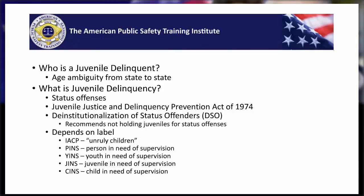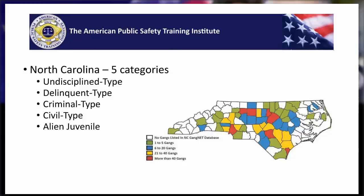Still other states limited the types of charges that could be classified as a criminal offense. We're going to take a look at North Carolina in that regard. North Carolina developed five categories according to the Governor's Crime Commission in 2010.